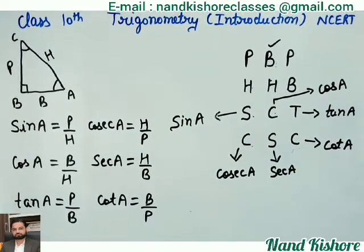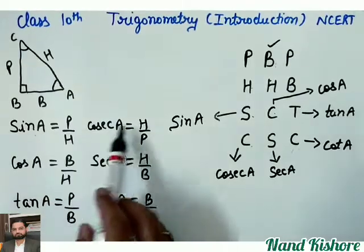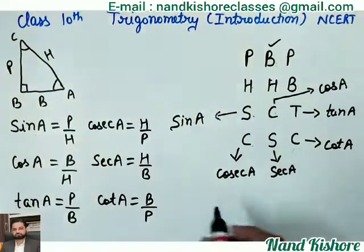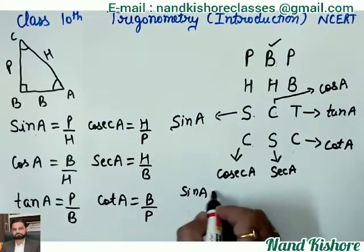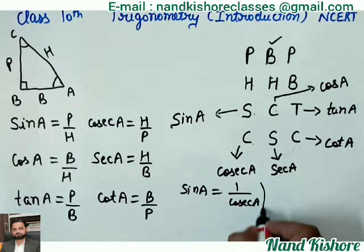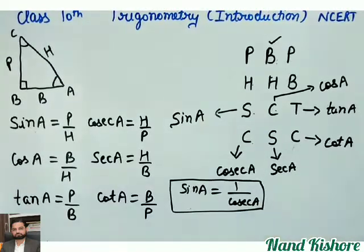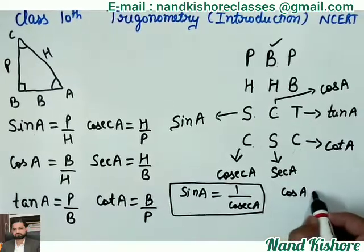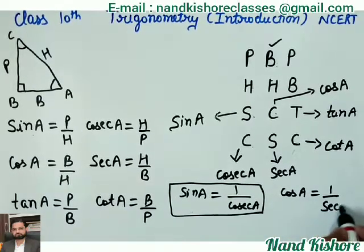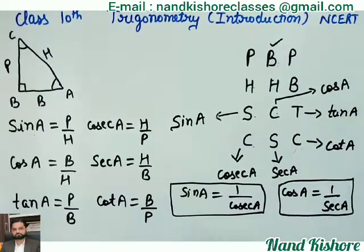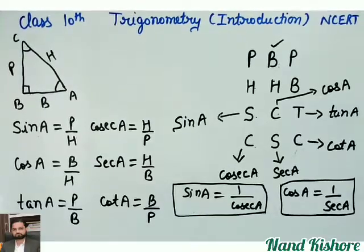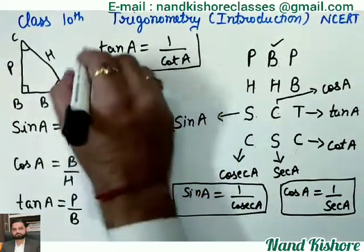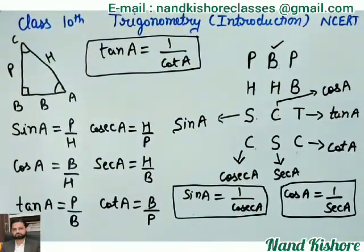From the pattern we can see: sine is P/H and cosecant is H/P — they are reciprocal of each other. So, sine A is equal to 1 divided by cosecant A. Similarly, cos A is equal to 1 divided by secant A. And tangent A is the reciprocal of cotangent A.